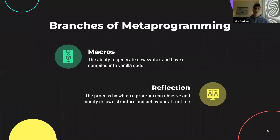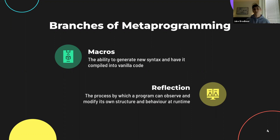And this can be split into two main branches. The first being macros, which is the ability to generate new syntax and have it compiled into vanilla code — in our case, just JavaScript. And then there's also reflection, which is the process by which a program can observe and modify its own structure and behavior at runtime.